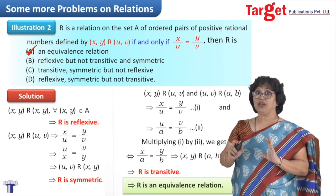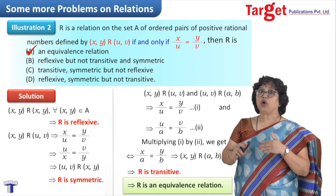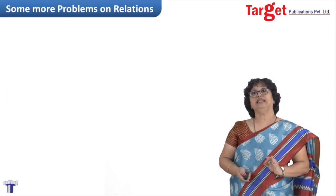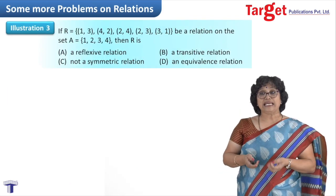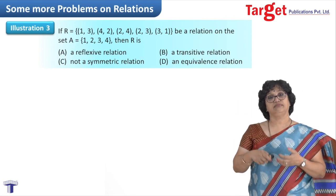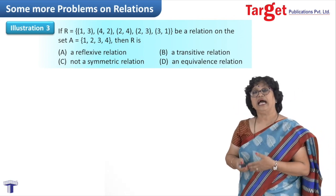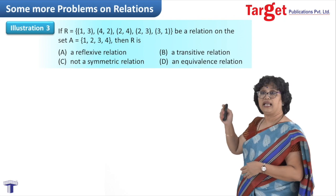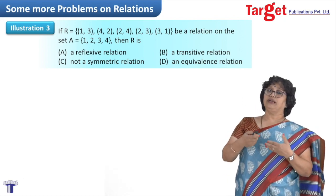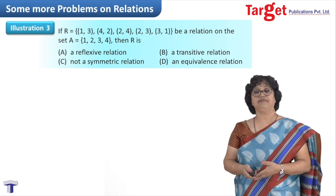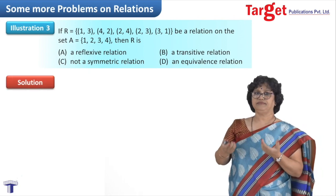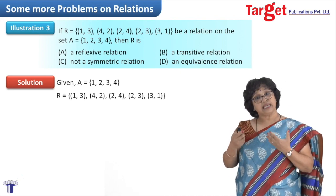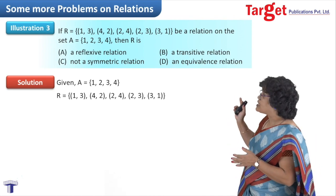I hope everyone understood what we have done. Please do not work haphazardly — go step by step and arrive at the conclusion. Now let us take the third problem. The relation R is given in terms of ordered pairs, and set A is described as {1, 2, 3, 4}. The relation R is given, and we have four options regarding reflexive, transitive, symmetric, etc.